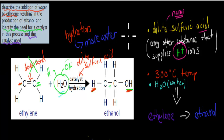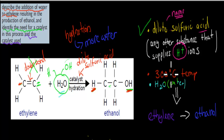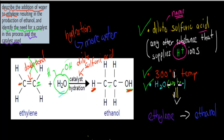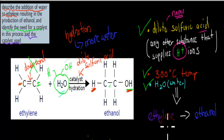We also need high or moderate temperatures of about 300 degrees Celsius. So three things must be present: the catalyst (dilute sulfuric acid), 300 degrees Celsius, and water. If all three are present, we can go from ethylene to ethanol.